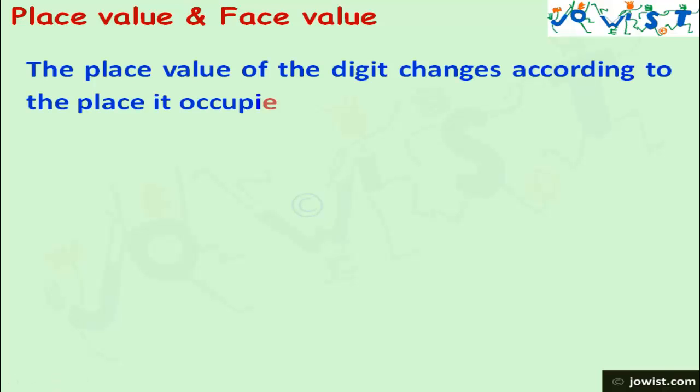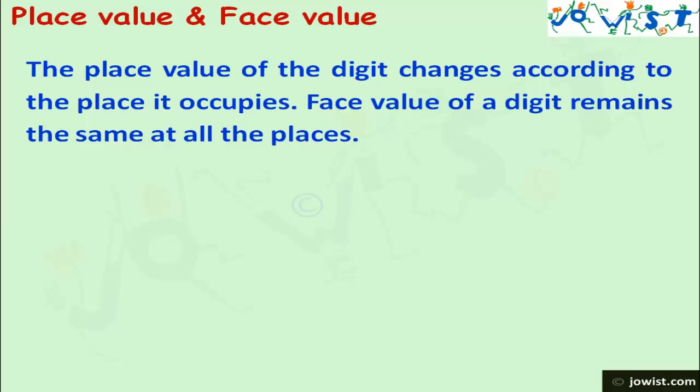The place value of the digit changes according to the place it occupies. Face value of a digit remains the same at all the places as we have seen in the number 58.